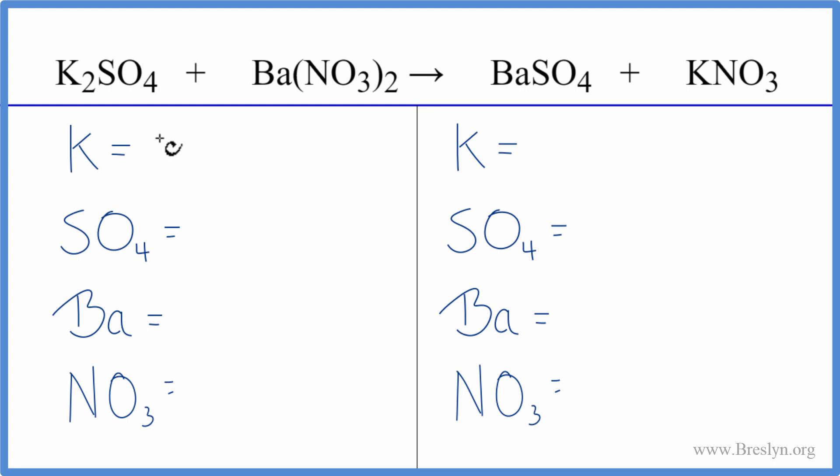We'll count the potassium. We have two of those. Then we have a sulfate here and a sulfate here. It's a polyatomic ion that stays together in this chemical reaction, so we can count this as just one item. Barium, we have one. Then the nitrate, we have it here and here again, this NO3. It's a polyatomic ion. Let's count this as one thing as well. We have one nitrate times two, so we have two of those.